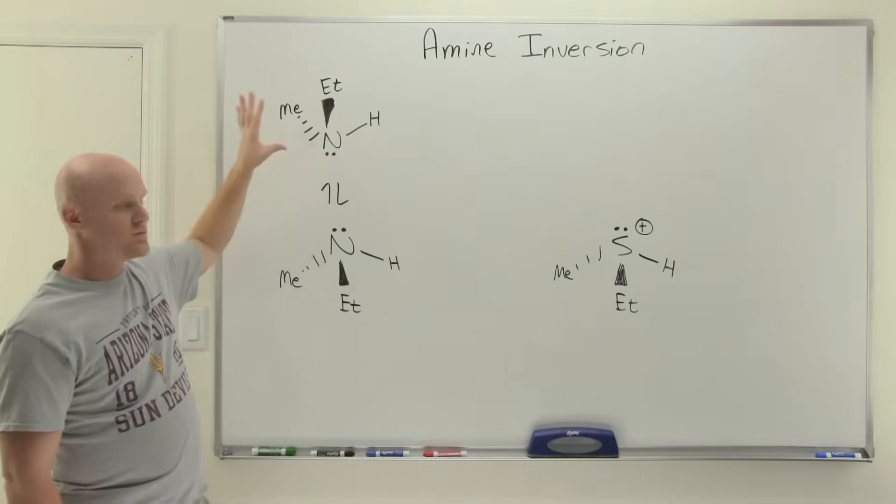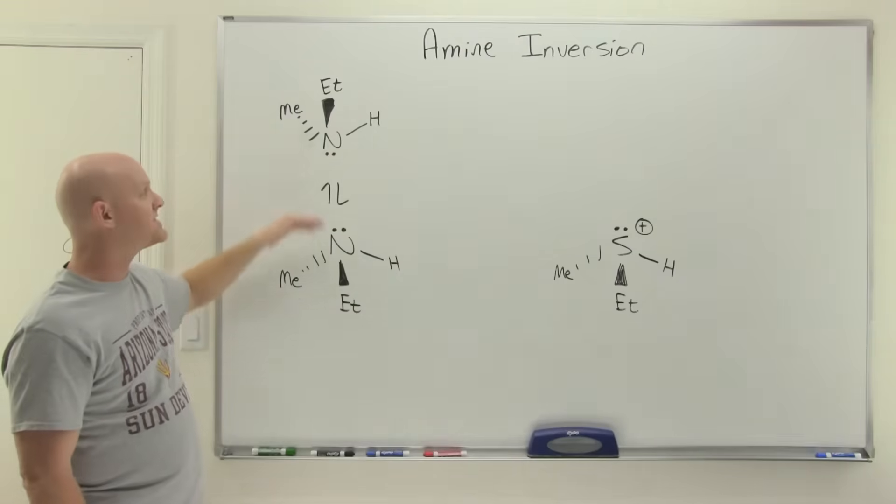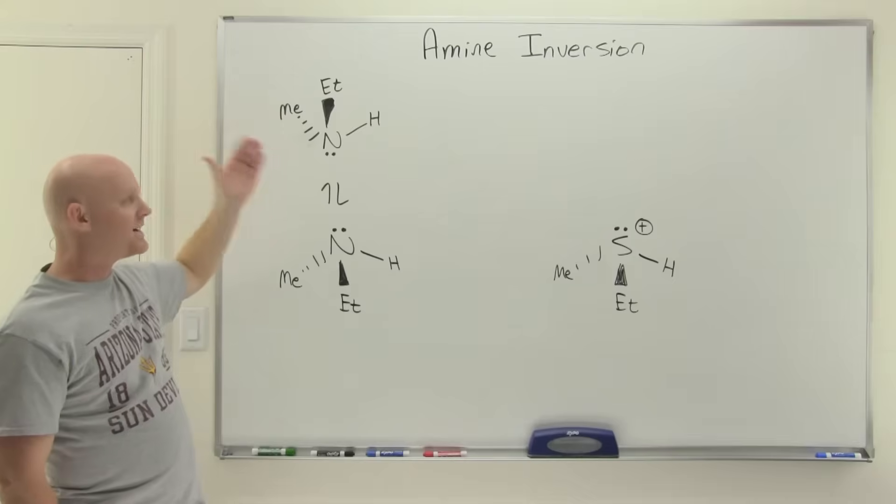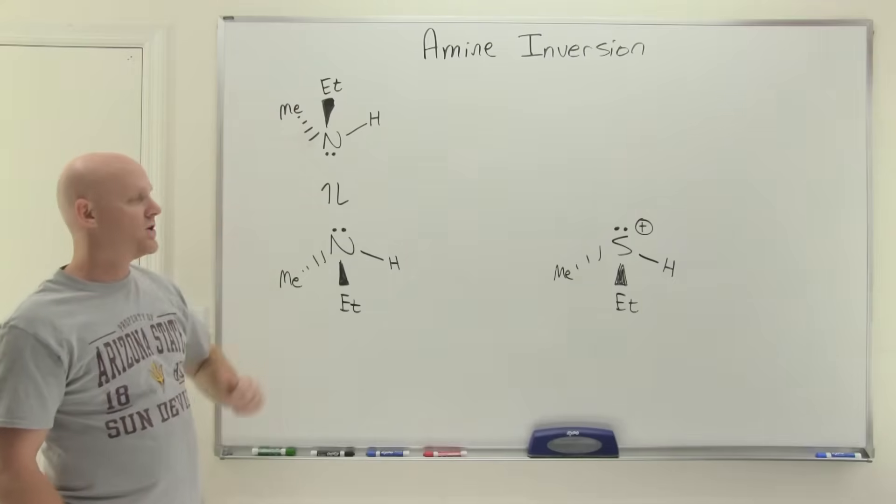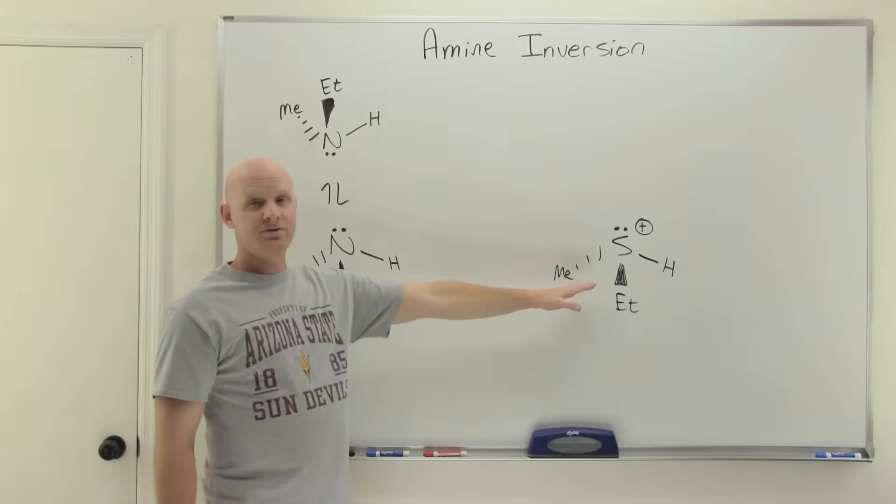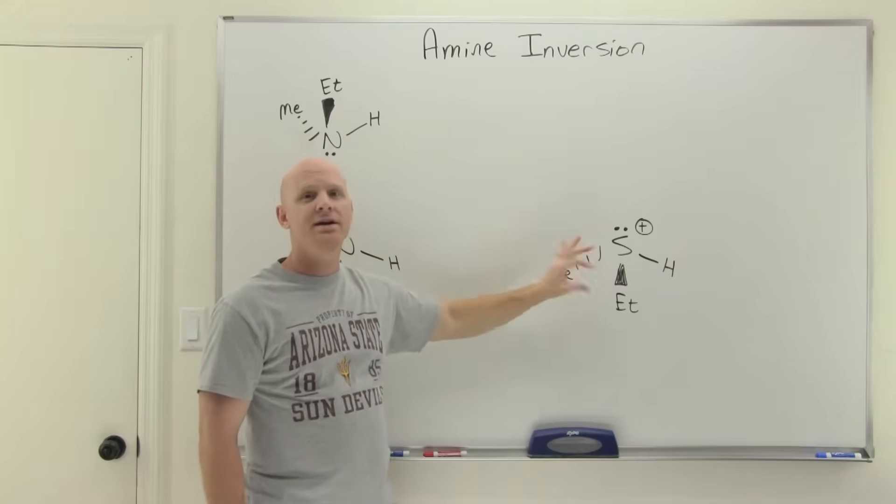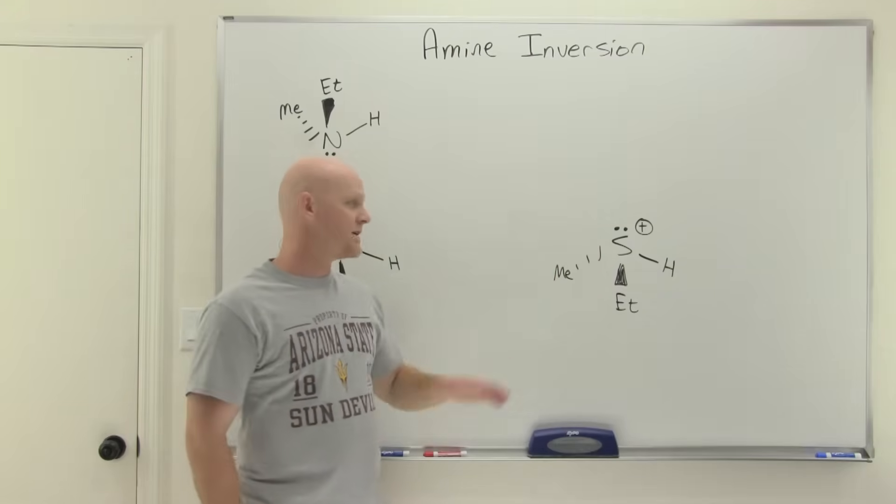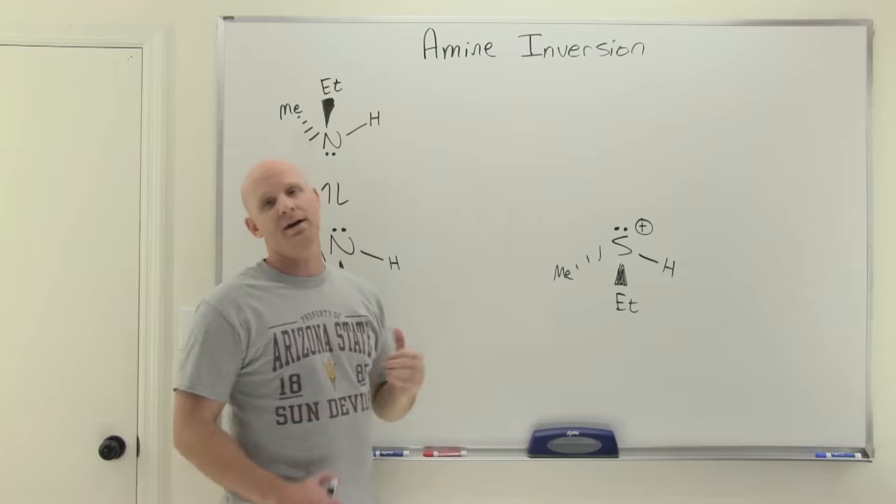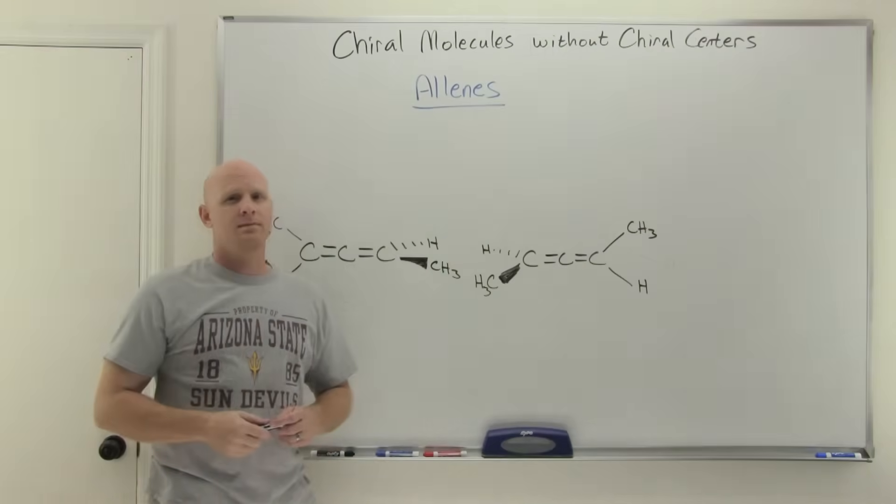And so once again, with amine inversion, we would not define these molecules as chiral because they readily interconvert. You actually can't have one without the other at any kind of normal temperature, but not true with sulfur. With sulfur, you could totally have one enantiomer without having the other. They don't readily interconvert the way amines do.